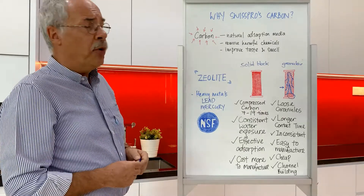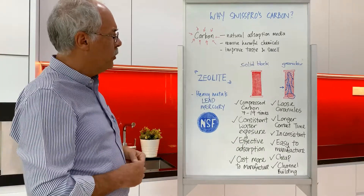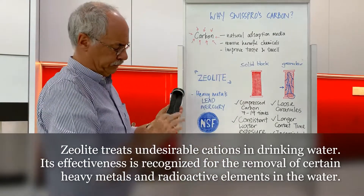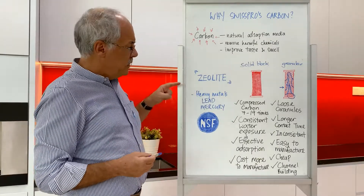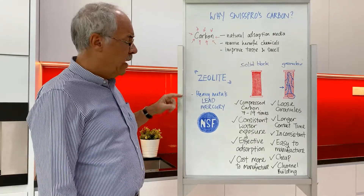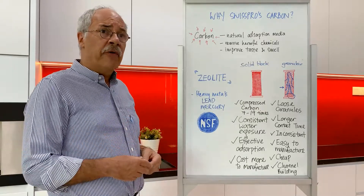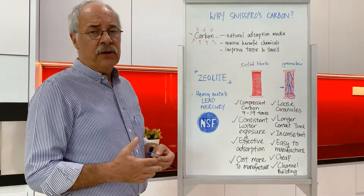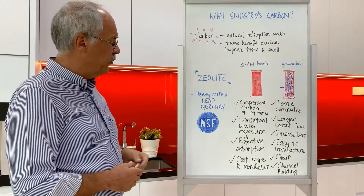One important point: in SwissPro Carbon there is an additional ingredient called zeolite, which is equally embedded in the carbon block. Zeolite's main target is to remove heavy metals — for example, lead or mercury. Just think of old lead pipes that release small particles of lead, which are not healthy. So zeolite in the carbon removes these heavy metals as well.